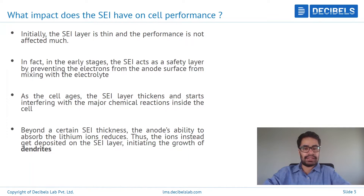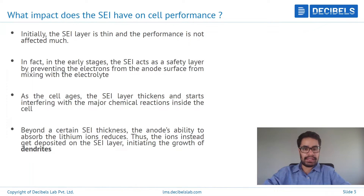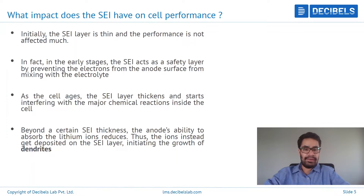What effect does SEI have on cell performance or cell behavior? Initially, the SEI layer is very thin and does not have much of an influence on performance. But as and when the cell goes on getting used, and as the number of cycles goes on increasing, the thickness of the SEI layer also goes on increasing and can start to interfere with the main reactions occurring in the cell. By altering these reactions, more side reactions can occur, more of the electrolyte structure is decomposed, and instead of performing as required, the cell starts to degrade and undergoes what is called capacity fading. It can also worsen to a situation where certain formations inside the cell, such as dendrites or lithium branches, can start to occur.